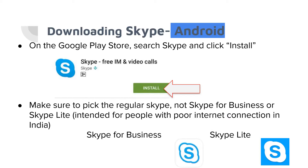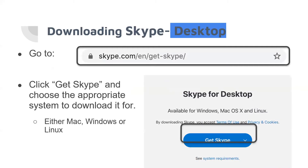For downloading Skype on Android, go to the Google Play Store, search Skype, and click Install. Click on Skype or Skype Lite — not Skype for Business. There is a difference between the two: Skype Lite has a blue background, while Skype for Business has a white background. For desktop, click Get Skype and choose the appropriate system — Mac, Windows, or Linux.